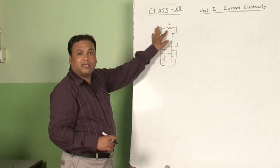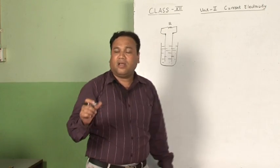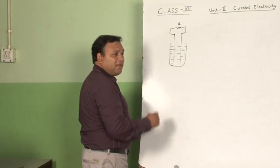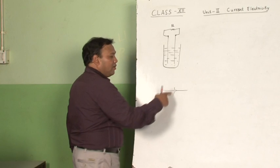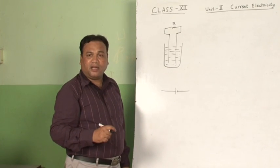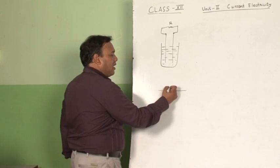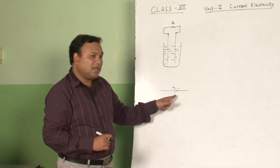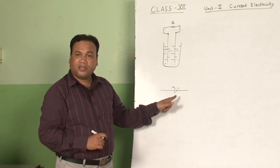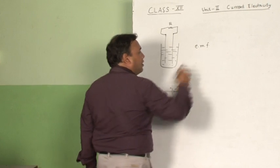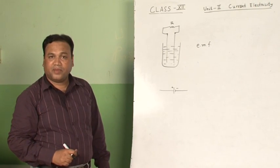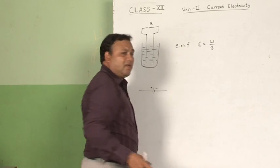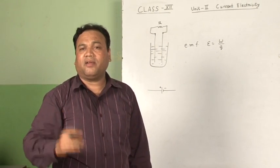When a cell is connected across a conductor, it provides a potential difference, causing current to flow. The circuit symbol of a cell is one longer line (positive terminal) and one shorter line (negative terminal), both parallel and close together. It is an electrochemical cell. Each electrochemical cell has a property called EMF — electromotive force — defined as the work done in driving charges from one terminal of the battery to the other terminal.